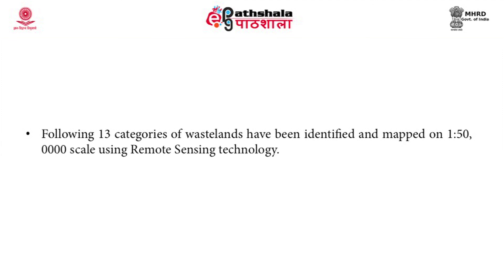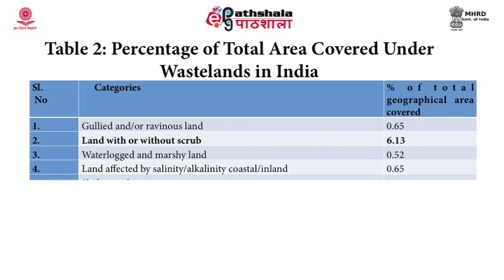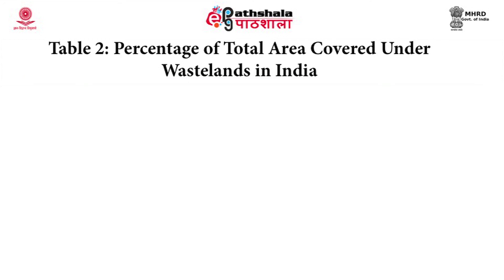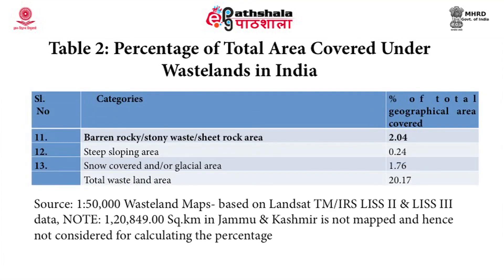The following 13 categories of wastelands have been identified and mapped on 1:50,000 scale using remote sensing technology. A table shows the percentage of total area covered under wasteland, where out of all 13 classes, wasteland with or without scrub occupies the highest percentage at 6.13%, followed by underutilized or degraded notified forest land at 4.44%, and barren rocky or stony waste or sheet rock area at 2.04%. The least area under this category is occupied by mining or industrial wastelands.